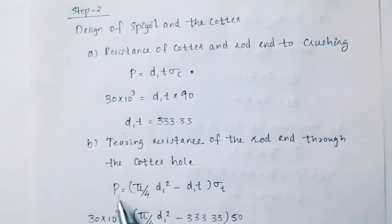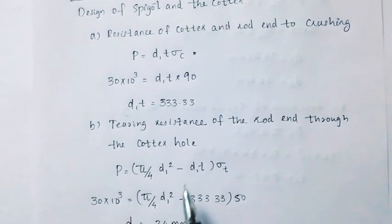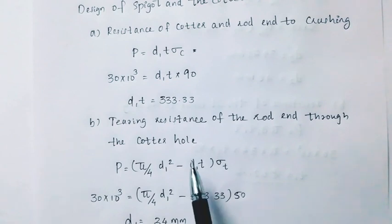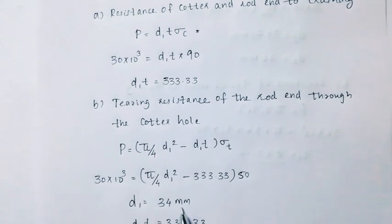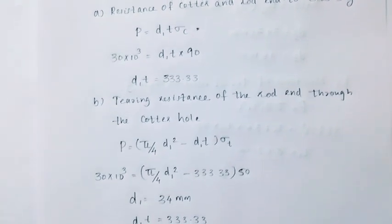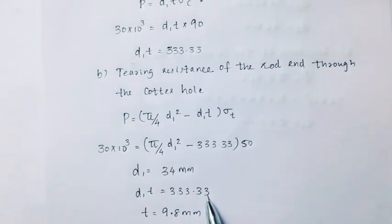P equals pi by 4 times D1 squared minus D1 T into sigma T. Substituting values, D1 equals 333.33, then t equals 9.8 mm.